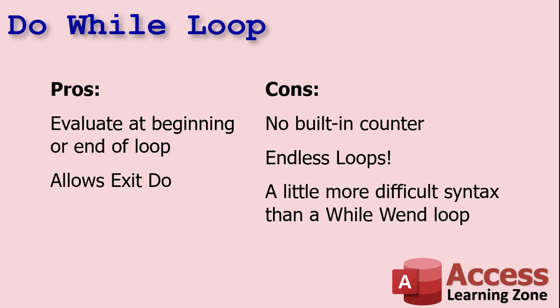Pros: you can evaluate the condition at the beginning or the end of the loop, and it supports EXIT DO. Cons: there's no built-in counter like a FOR loop, you can still run into endless loops if you're not careful, and the syntax is a little more complex than WHILE WEND — but you get used to it. Whichever loop you choose is completely up to your preference; they all perform pretty much the same.